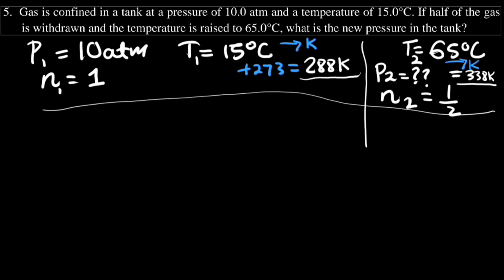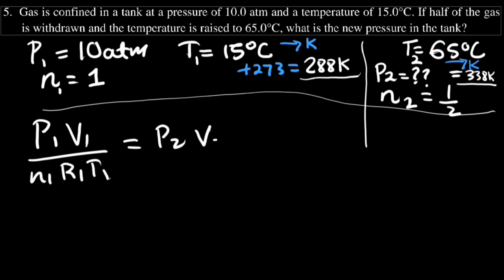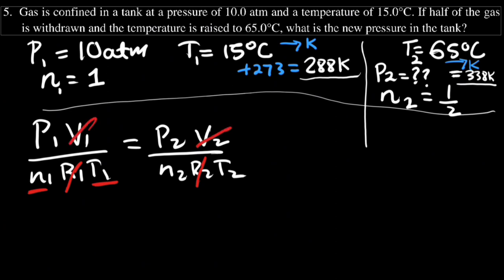Now with this information, which law do we use? Use the full formula P1V1/(N1T1) = P2V2/(N2T2). Since R is always constant and the volume is also constant here, these cancel out, giving us the simplified relation: P1/(N1·T1) = P2/(N2·T2).